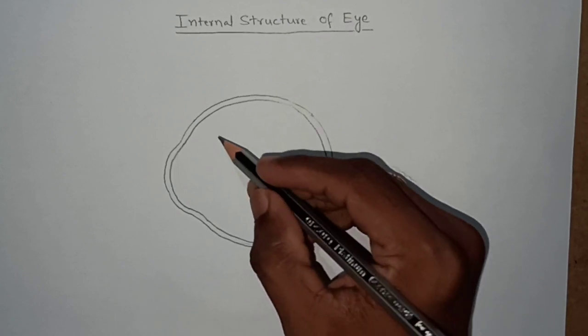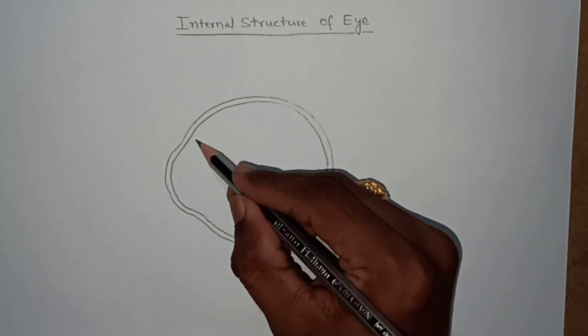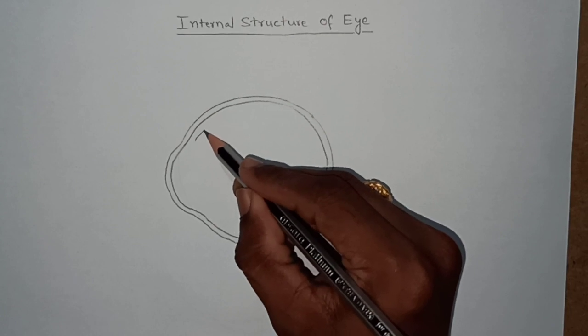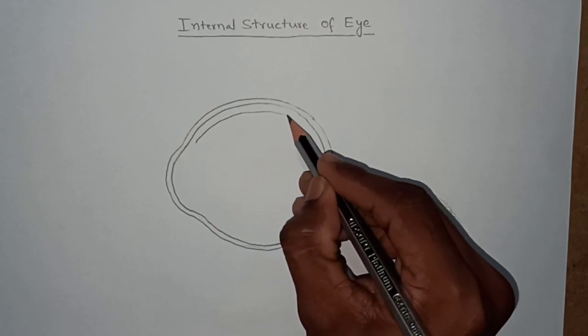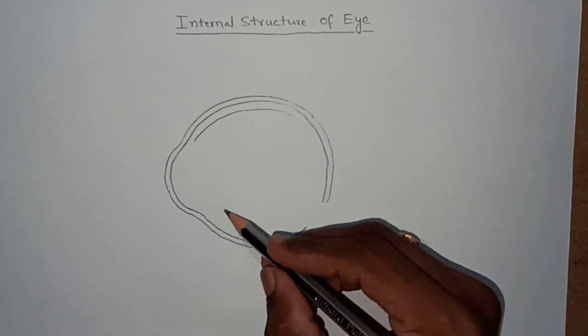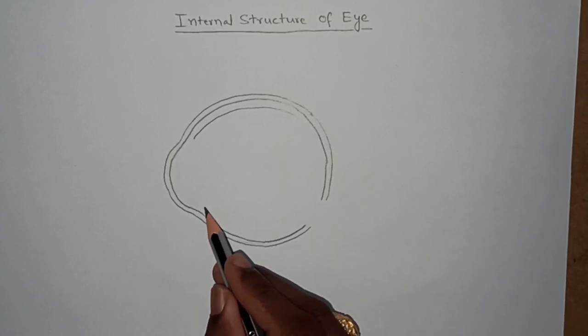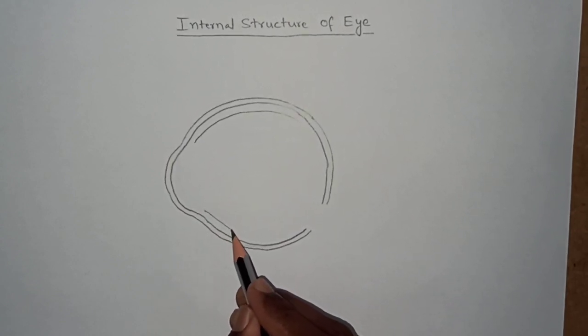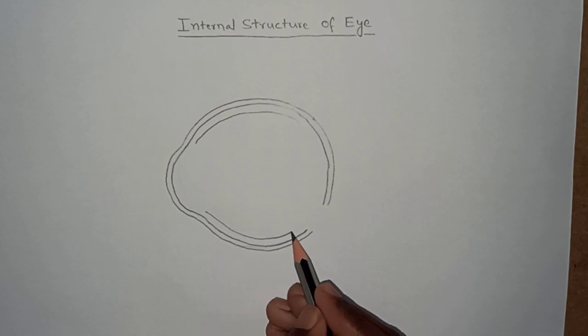Now we have to draw the second layer, choroid layer, which is having more blood vessels and it is very dark in color. The second layer is called choroid layer.